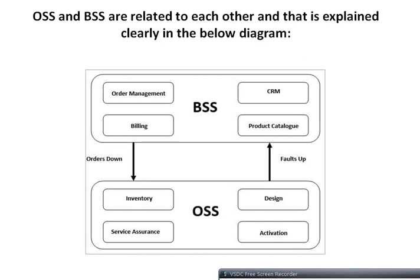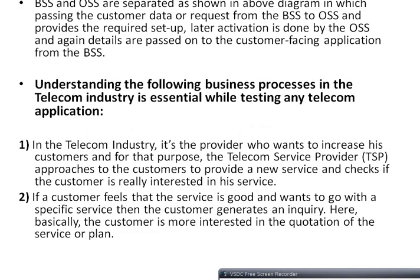OSS and BSS are related to each other. As shown in the diagram, the components include order management, billing, inventory, service assurance, CRM, product catalog, design, and activation. BSS and OSS are separated, with customer data or requests passing from BSS to OSS. The required setup and activation are handled by OSS, and details are then passed back to the customer-facing application through BSS.